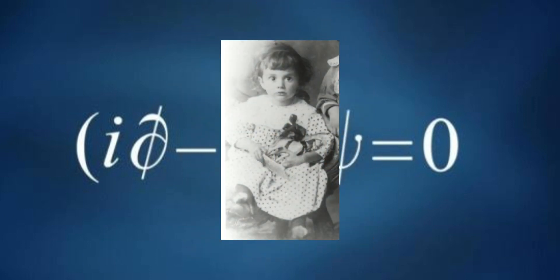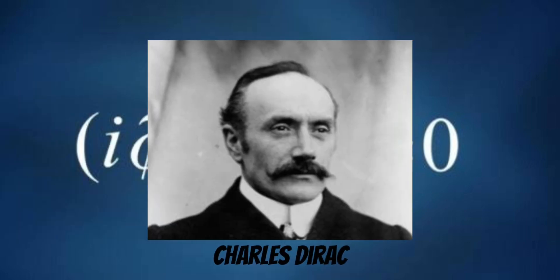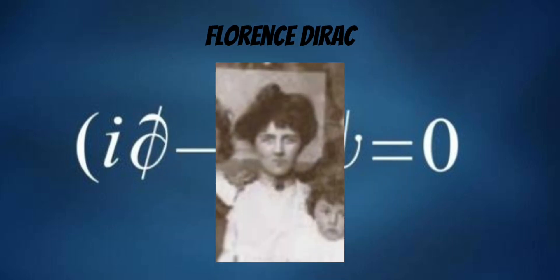Paul Adrian Morris Dirac was born on August 8, 1902, in Bristol, England. His father was a Swiss immigrant, and his mother was from Cornwall.